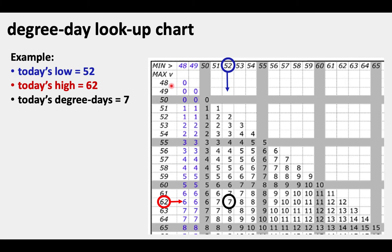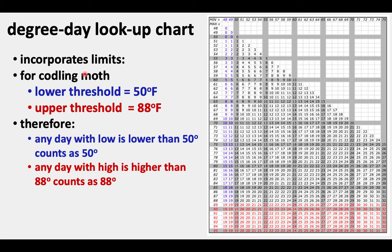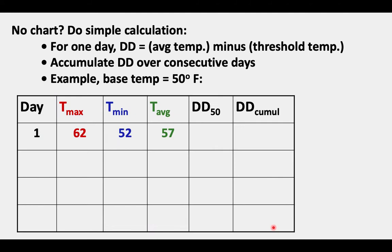Let's look at one corner of that chart as an example. Let's say today's low is 52 and the high is 62. For that min, we look across the top and find 52. The high temperature was 62, so we look down to find 62. Then we see where those two intersect — and you see it's 7. So on that day there were 7 degree days. This degree day chart already incorporates those limits for codling moth — the lower and upper thresholds of 50 and 88 degrees. Any day when the low is lower than 50 degrees counts as 50 degrees, and any day with the high higher than 88 just counts as 88.